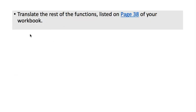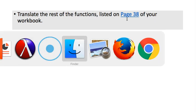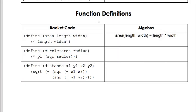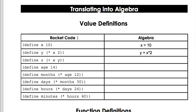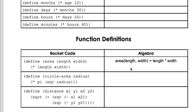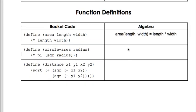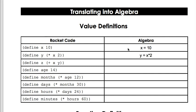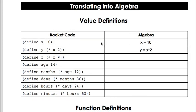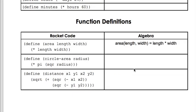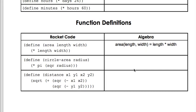Now, last thing of today is there are some other functions on page 38 of your workbook. So on page 38, previously you did this part with the definitions where you took Racket code and turned it into algebra. Now, I don't remember if you did that or not. So whatever is left to do on page 38, do that and then you can be done.